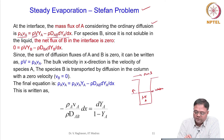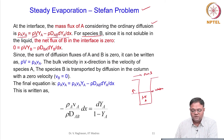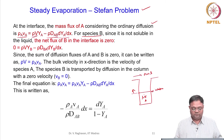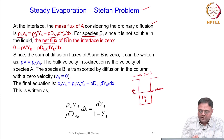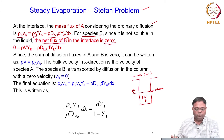Now let us do it for species B. Species B is a gas; it is not going to condense and it is not soluble in the liquid. In this case, there is no bulk flow of B into the interface. This means that at the interface the net flux of B is zero, that is rho_B * V_B = 0, but due to convection.